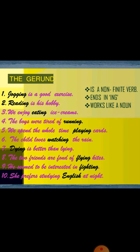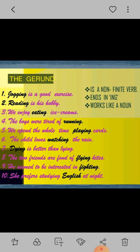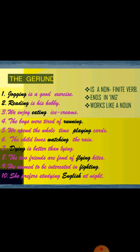The gerund is a non-finite verb ending in -ing that works like a noun. Gerunds are nouns made from verbs ending in -ing. For example, 'jogging is a good exercise.' Jogging does not tell any tense — past, present, or future — so it is a gerund. 'Reading is his hobby.' Similarly, eating, running, playing, watching, dying, flying, fighting, and studying are all called gerunds. Thanks for watching. Hope you got it.